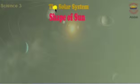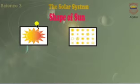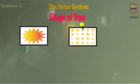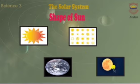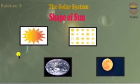What is the shape of the sun? As you can see in this picture, the shape of the sun is like a sphere — just like the earth and the moon. The sun is a huge ball of hot gases, shaped like a sphere.